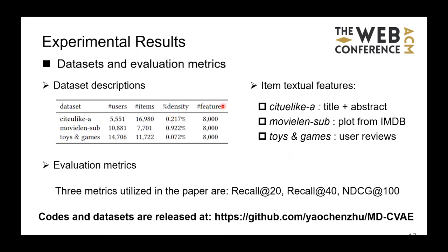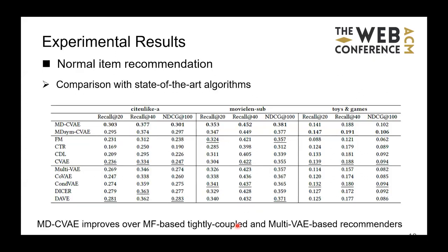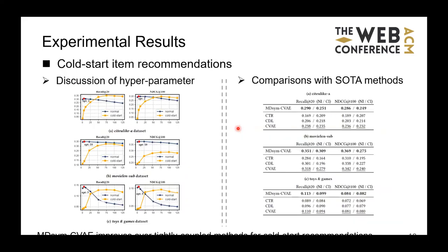We briefly go through the experiments — details can be found in our paper. We conduct experiments on three datasets with item features available, using recall and NDCG metrics to evaluate model performance. All code and datasets are made public in our repository. Comparing with state-of-the-art recommender systems on normal item recommendations, our method achieves competitive results. Comparing with tightly coupled MF-based recommender systems on cold-start item recommendations, our UAE-based method, which models nonlinear collaborative information among users, shows large improvement over shallow MF-based methods across all three datasets.